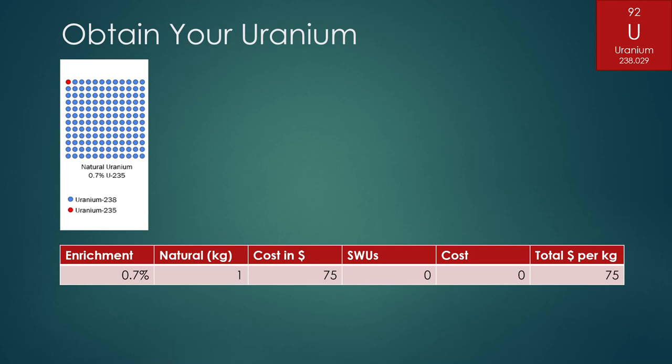And I have a little chart here. We can see that it has 0.7% uranium-235, and the cost for one kilogram is about $75, which kind of surprised me. It's actually relatively cheap as far as metals go. Unfortunately, this kind of uranium isn't very useful. Can't really do anything with it.